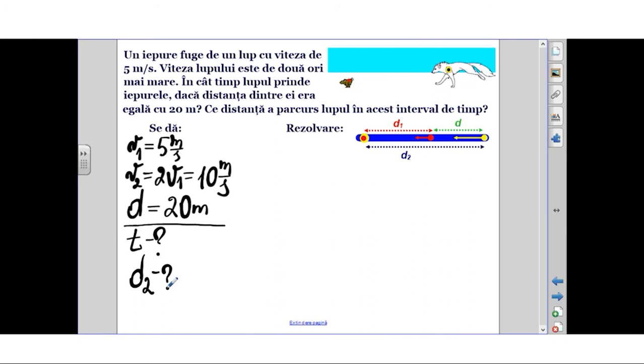We observe in the right part of the diagram the initial position of the rabbit and wolf. The rabbit is represented by the red dot, the wolf by the yellow dot. When they start moving, indicated by arrows showing the velocity directions, we obtain the position where the wolf catches the rabbit.